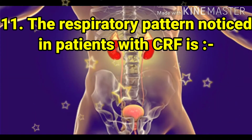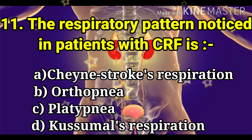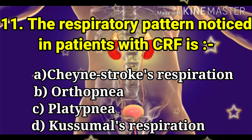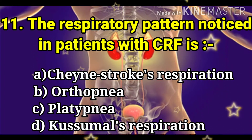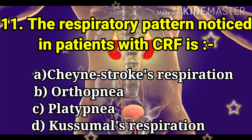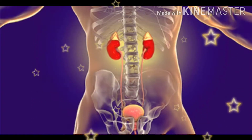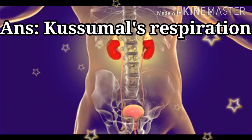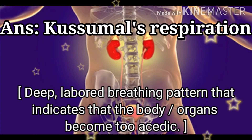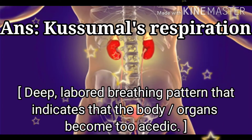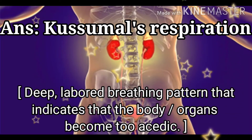Next question: the respiratory pattern noticed in a patient with CRF (chronic renal failure). The options are Kussmaul's respiration, orthopnea, platypnea, and Cheyne-Stokes respiration. The answer is Kussmaul's respiration, which is a deep labored breathing pattern indicating the body has become too acidic.